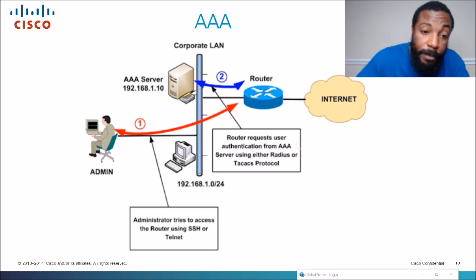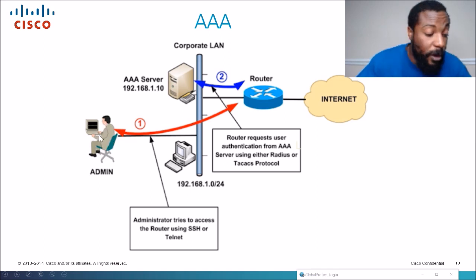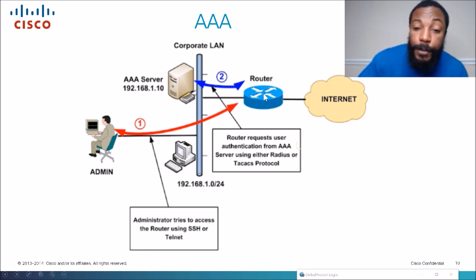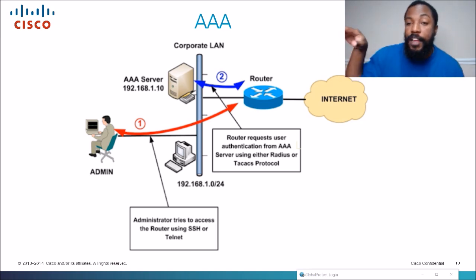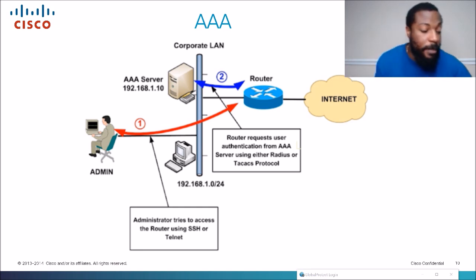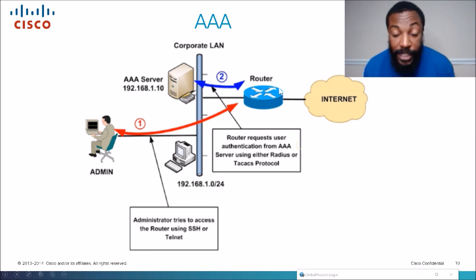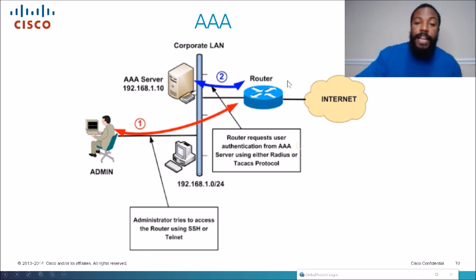So the usernames and passwords are stored on that AAA server. For example, a user logs into a router or wireless controller with their username and password. The router sends that information to the AAA server, which checks its database — if the credentials match, it confirms access is granted. The AAA server sends the confirmation back to the router or wireless controller, and then the administrator is granted access. That's how AAA works.